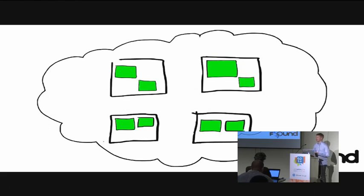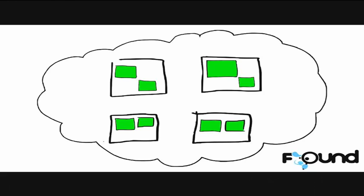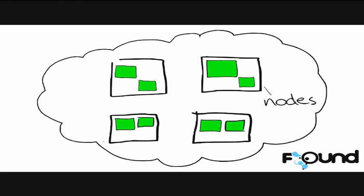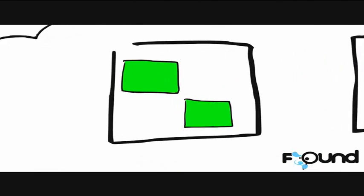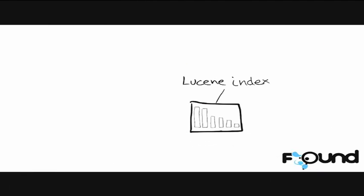Before I get into the good stuff, let me set some context — this is sort of an agenda in reverse. When you work with Elasticsearch you have a cluster of nodes, and within the cluster you have Elasticsearch indexes that can span multiple nodes through shards. A shard is essentially a Lucene index. Lucene is the full-text search library Elasticsearch is built on — it makes Lucene's awesomeness available in a distributed setting.